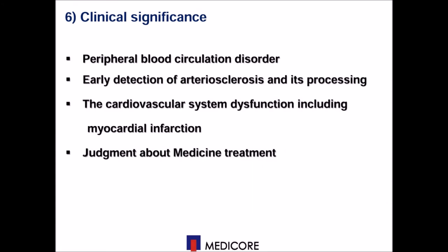It is very important to know how to use this system and where it will be used. With the device, you can predict peripheral blood circulation disorders, and at the same time, you can pre-screen for cardiovascular disease, including cardiac infection. Also, you can use this system as an early detection tool for arterial sclerosis and the aging process. Finally, before and after treatment, you can get reliable effectiveness data on the treatment.